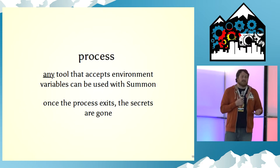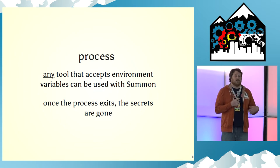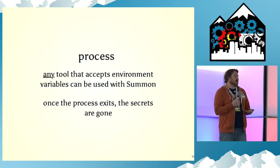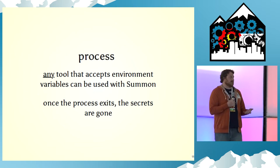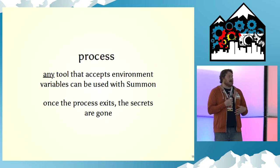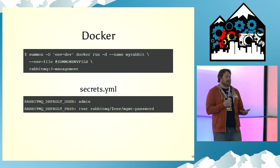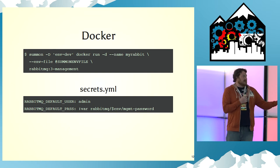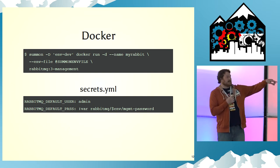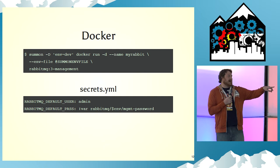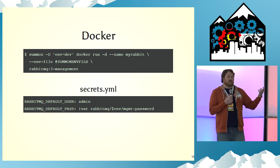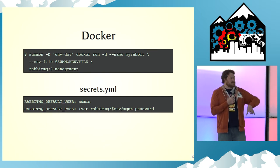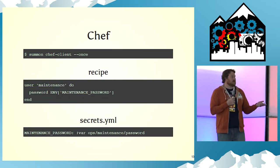The last part is the process — a tool like Terraform or Docker. Any tool that accepts environment variables can be used with Summon. I use it with Docker. You can see there's this magic '@summon-env' file — when you call Summon, it creates a memory-mapped file that resolves your secrets in the env file format and makes it available to Docker. It's really useful.